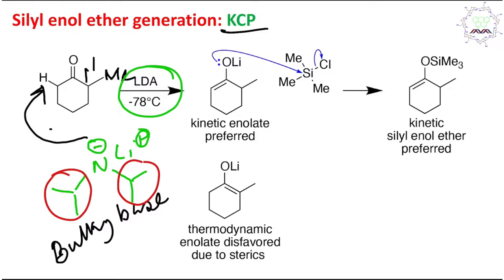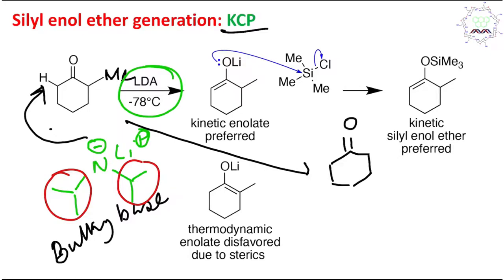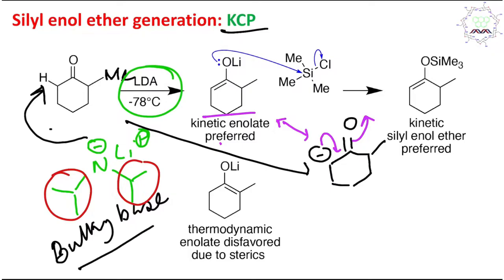So LDA abstracts the proton from the less bulky side and produces an enolate — first a carbanion is produced here. This carbanion has a canonical form where the negative charge shifts to produce what is called the kinetic enolate. LDA prefers this kinetic enolate because of its bulkiness.